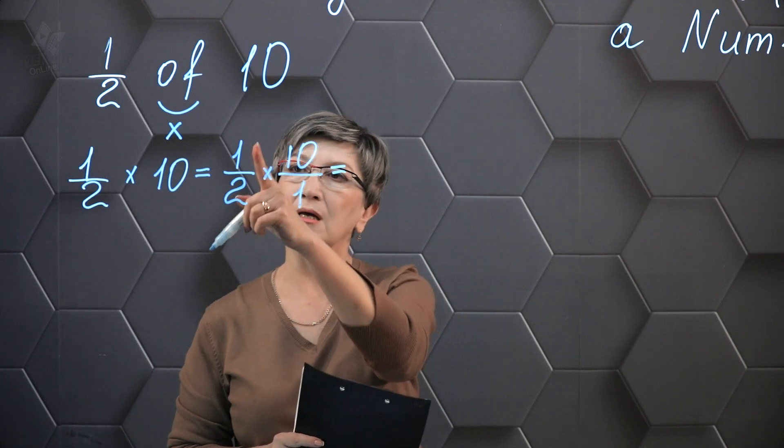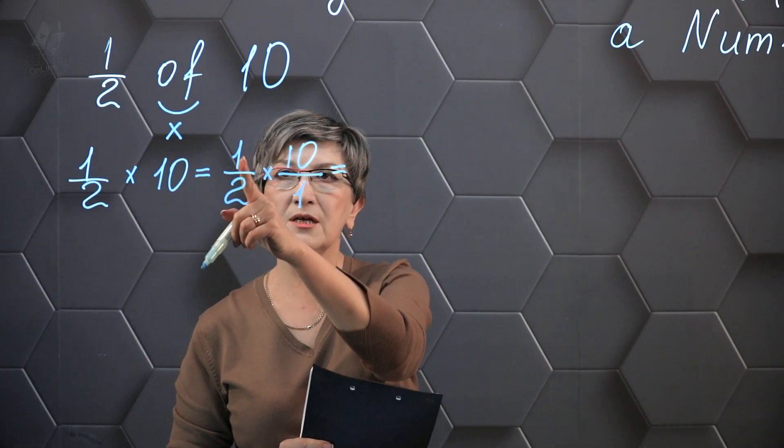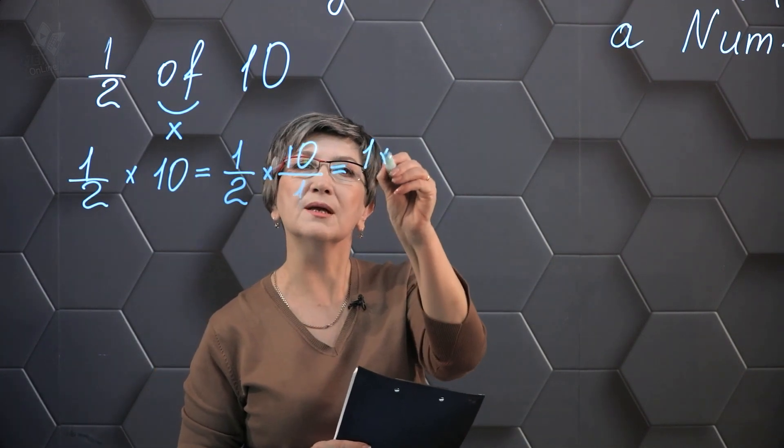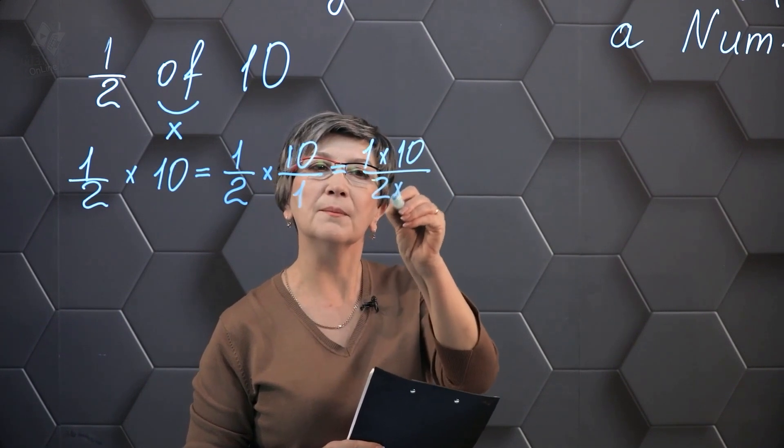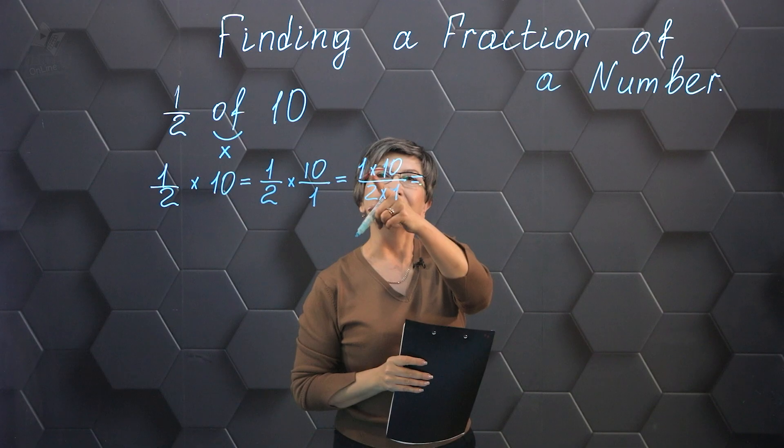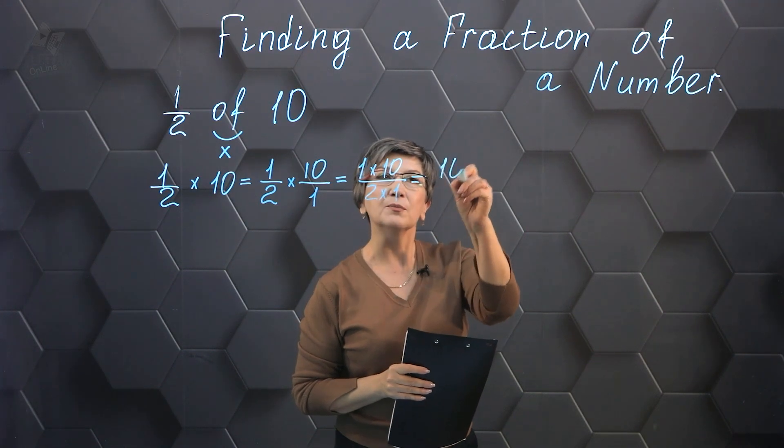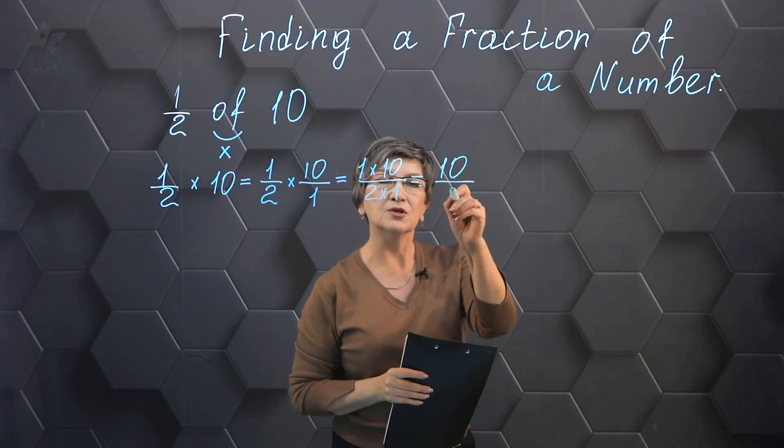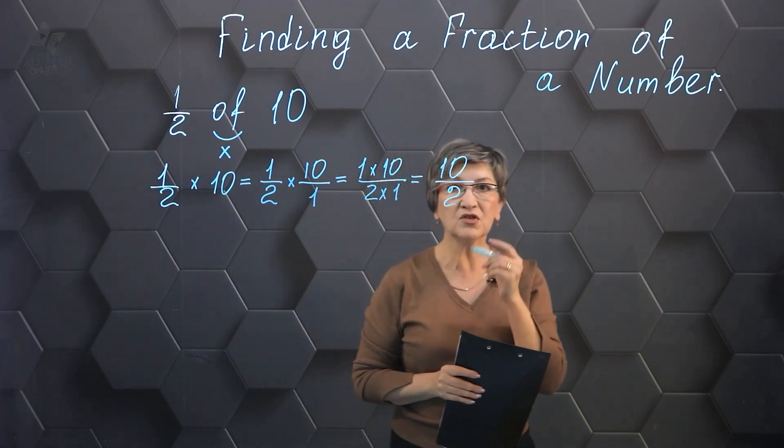According to the multiplication rule, I multiply the numerator by the numerator and the denominator by the denominator. 1 times 10 is going to be 10, and 2 times 1 is going to be 2.